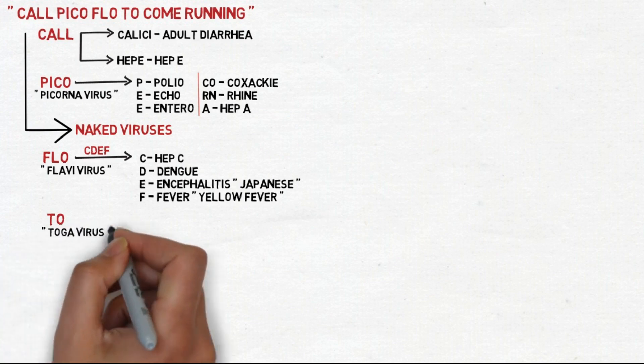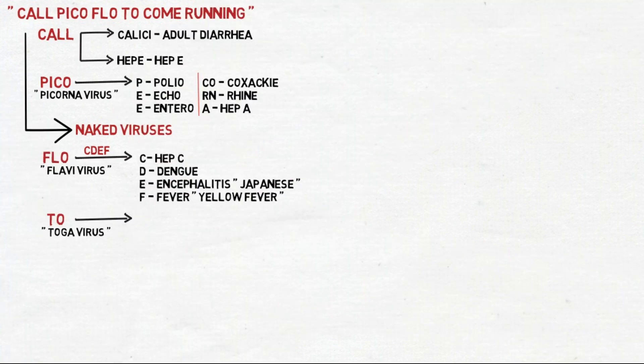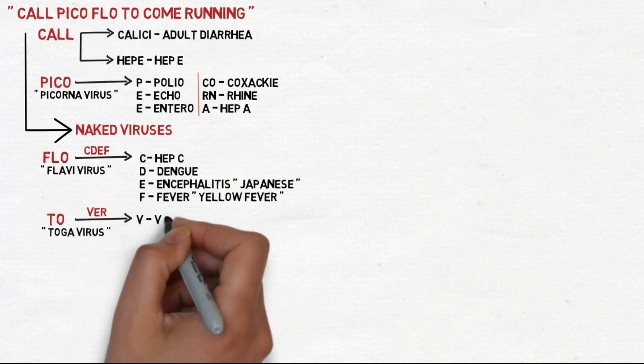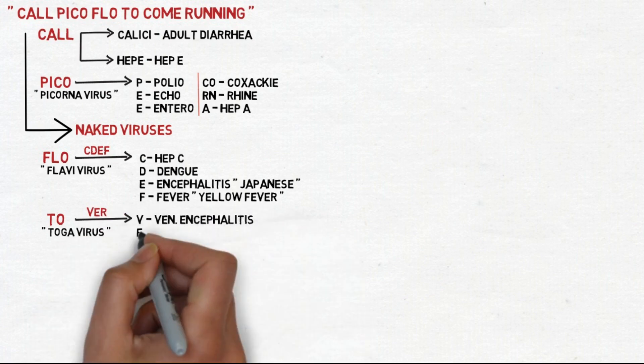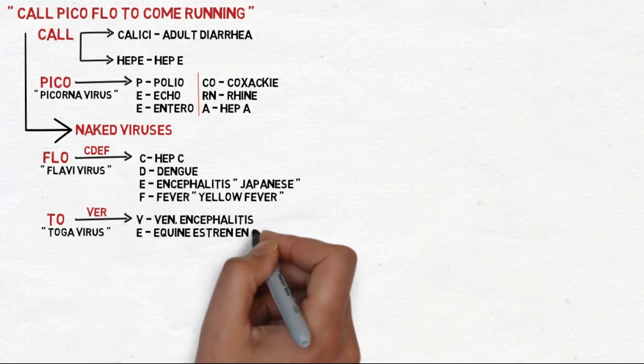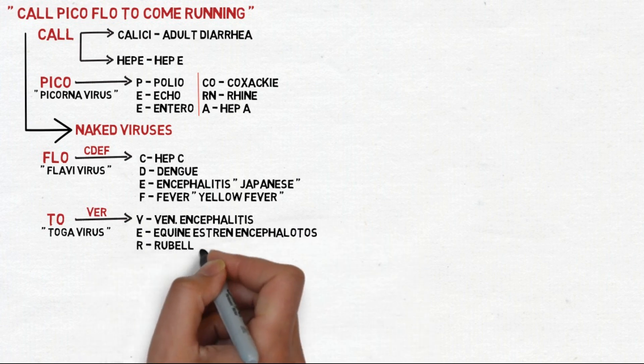Then we have TO which stands for Togavirus, grouped in the word V-E-R: V for Venezuelan encephalitis, E for Eastern Equine encephalitis, and R for Rubella or German measles.